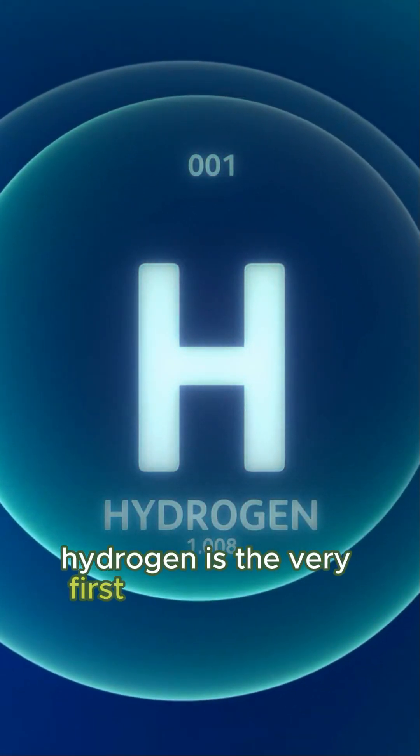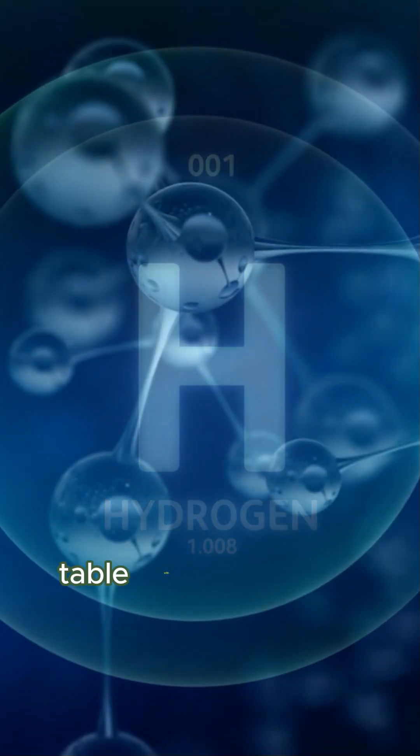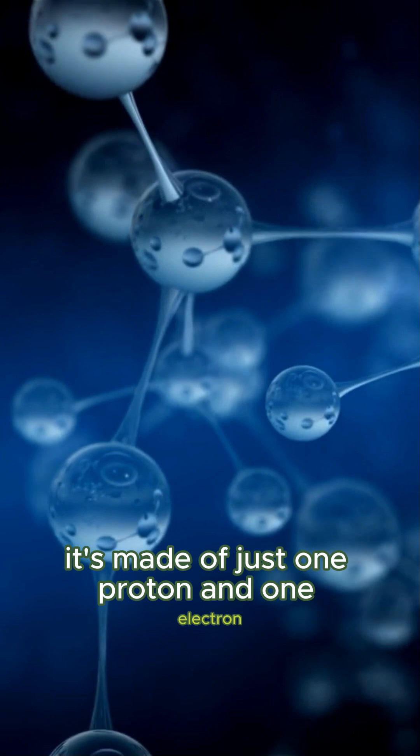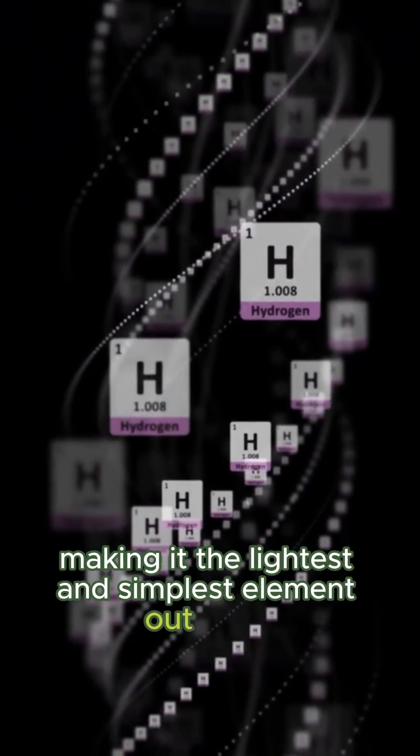Hydrogen is the very first element on the periodic table, with the atomic number one. It's made of just one proton and one electron, making it the lightest and simplest element out there.